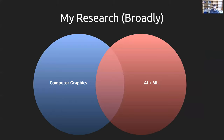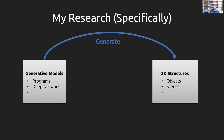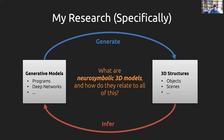Broadly speaking, my research sits at the intersection of graphics, artificial intelligence, and machine learning. More specifically, I'm interested in examining different kinds of generative models — symbolic programs, deep neural networks, various combinations of the two — and using them to synthesize what I think of as 3D structures: shapes, objects, scenes at different levels of detail. I also look at the inference problem: given a particular 3D structure, what is the underlying generative process that gave rise to it?